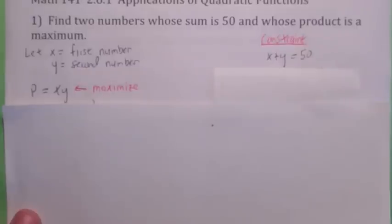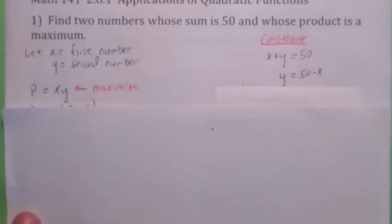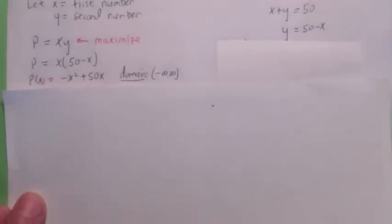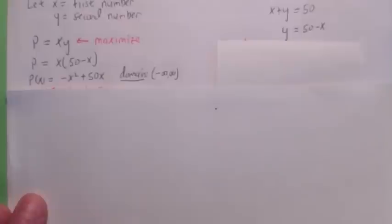So what do we do? We're going to have to solve the constraint equation for one variable. I'm going to solve it for y. Then you plug it into the original function, the product function. Wherever there's a y, we replace it with 50 minus x. So now we have the product in terms of one unknown. Lo and behold, it's a quadratic function that opens down, so everything's looking pretty good. It's worth noting the domain of these functions. Since x is just a real number, x can be negative in this problem, so the domain would be all real numbers.